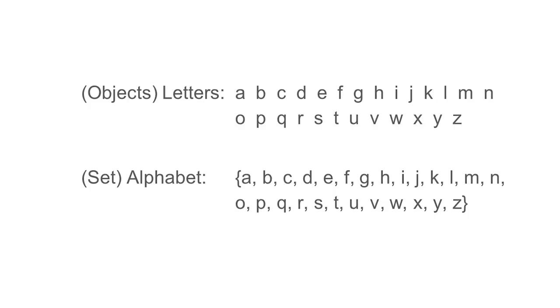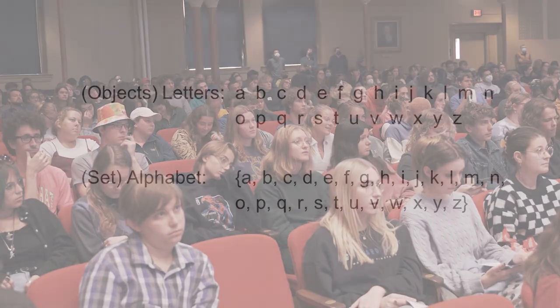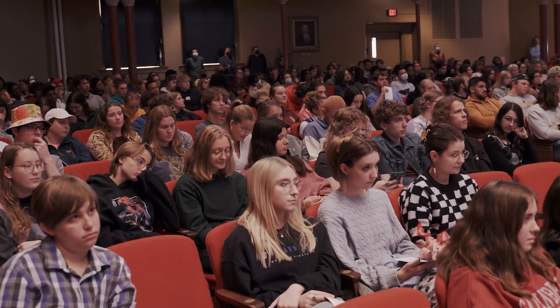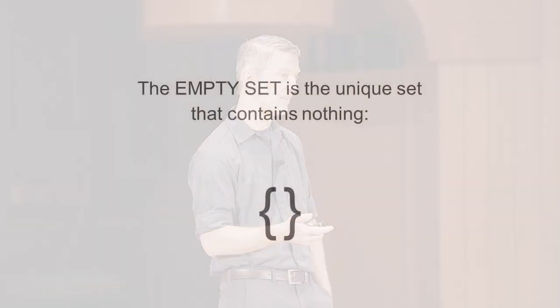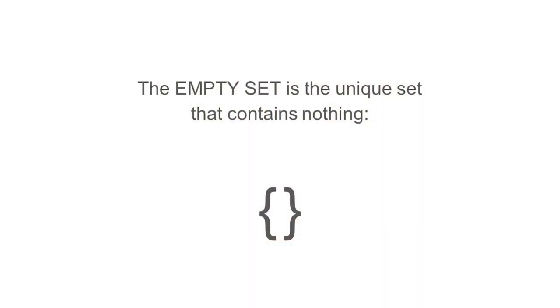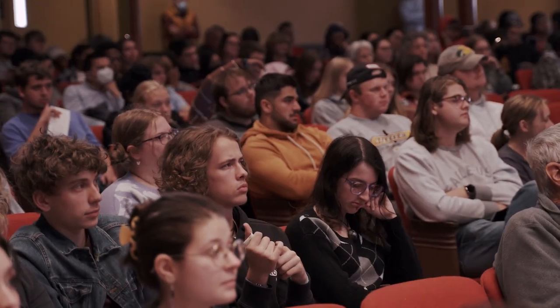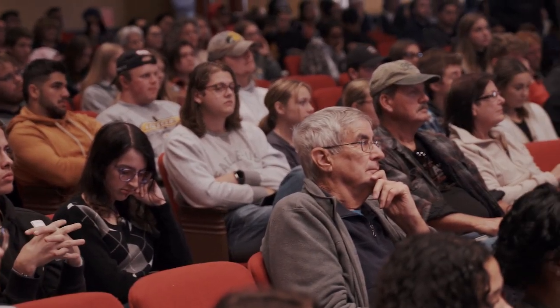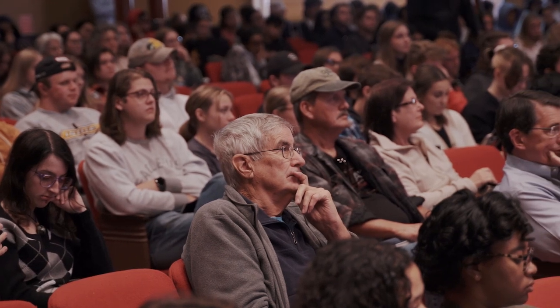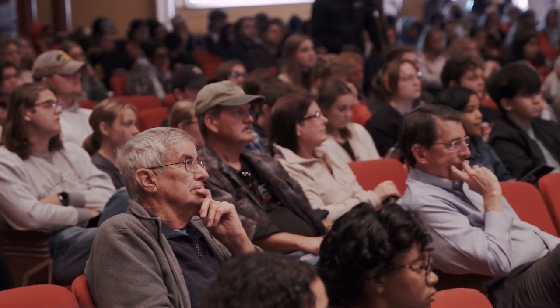For example, the set of all letters is not itself a letter — it's something new. It's an alphabet. Curiously, one of the most important sets for mathematicians is the set that contains the fewest number of things: the empty set. This is the set that contains nothing. But even though the empty set contains nothing, it's not itself nothing — it is, in fact, a thing. And the empty set is exactly the thing that we need in order to define the natural numbers in terms of sets.